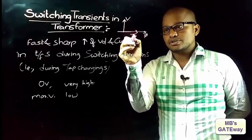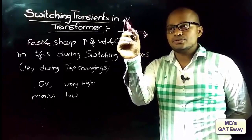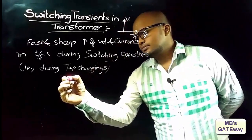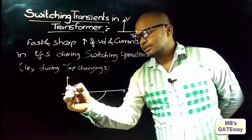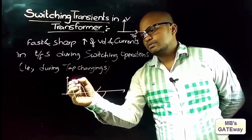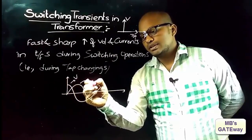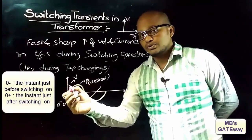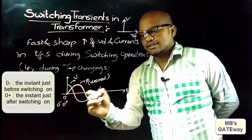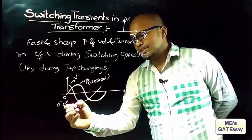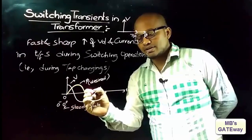To understand this, let's consider the phasor diagram of the transformer, in which this represents the voltage and this represents the flux φ. If permeability is constant, then i_mu will be in phase with flux φ, which means flux will lag by 90 degrees to voltage. From this phasor diagram, if flux φ is like this, then the voltage waveform will be like this. This is the voltage waveform and this is the flux waveform, which is the desired steady-state waveform.